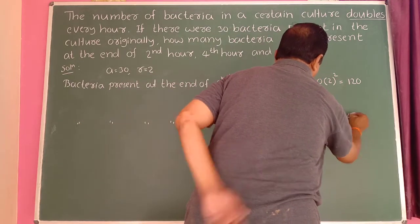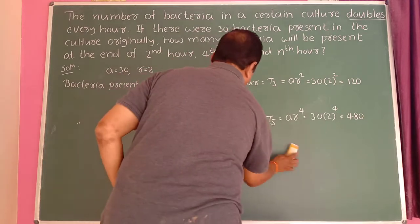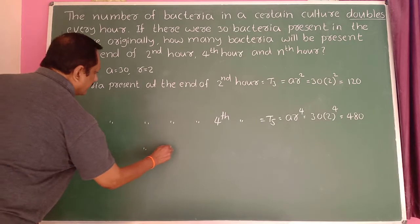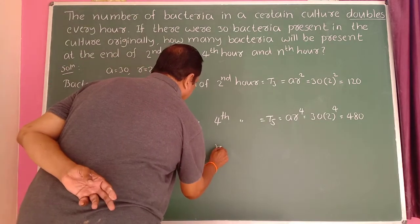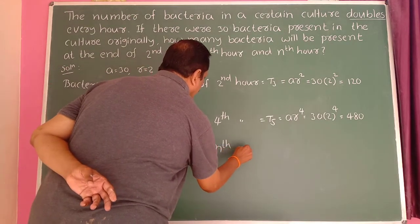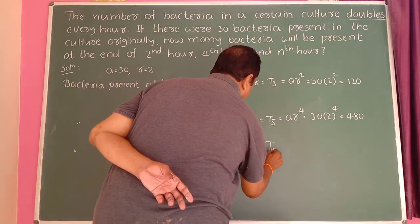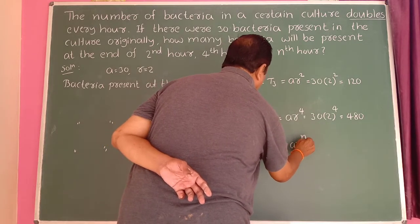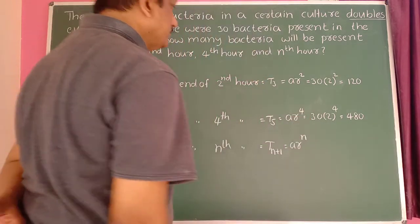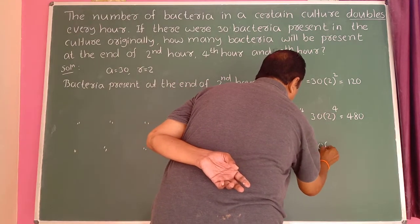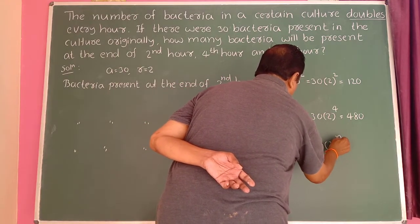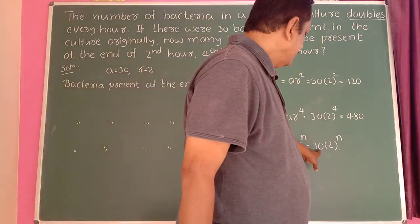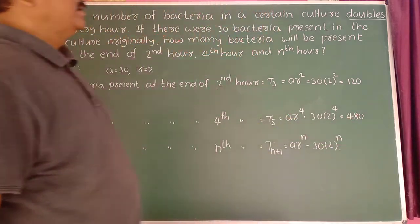Total 480 bacteria present at the end of the 4th hour. Bacteria present at the end of the nth hour is equal to T(n+1) = ar raised to n. Therefore this equals 30 × 2 raised to n at the end of the nth hour. So the total number of bacteria present at the end of the nth hour is equal to 30 × 2^n. This is the answer.